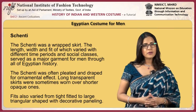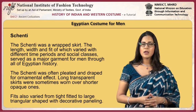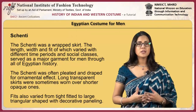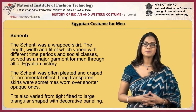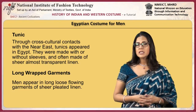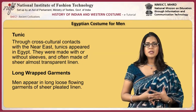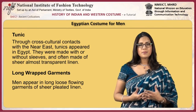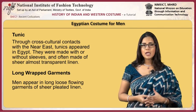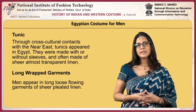Long, transparent skirts were sometimes worn over shorter, opaque ones. Fits also varied from tight-fitted to large triangular shapes with decorative paneling. Through cross-cultural contacts with the Near East, tunics appeared in Egypt. Tunics were made with or without sleeves and often made of sheer, almost transparent linen. Men appear in long, loose, flowing garments of sheer pleated linen.